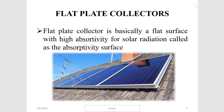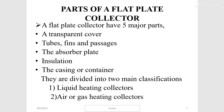A flat plate collector is basically a flat surface with high absorptivity for solar radiation, called the absorptive surface. A flat plate collector has five major parts: a transparent cover, tubes, fins and passages, the absorber plate, insulation, and the casing or container. They are divided into two main classifications: liquid heating collectors and air or gas heating collectors.